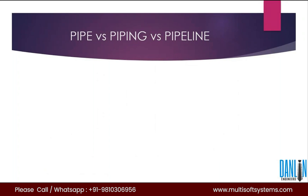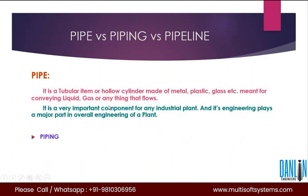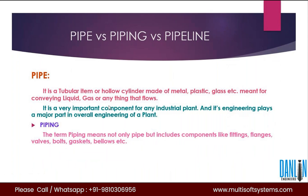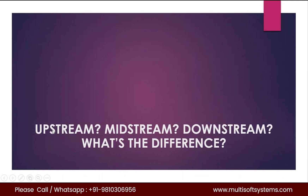A pipe is a single component — a hollow cylinder shape made of metal or non-metal used to transfer fluid, whether gas or liquid, from one place to another. Piping is a combination of components like pipes, fittings, flanges, elbows, valves, and everything together. A pipeline is a long-run pipe used to convey oil or gas over a long distance from one place to another — that is called a pipeline.